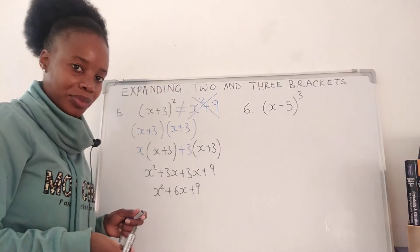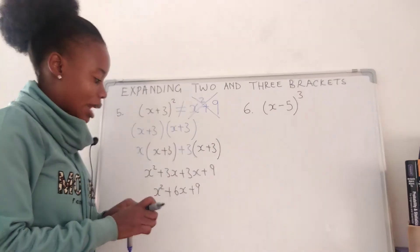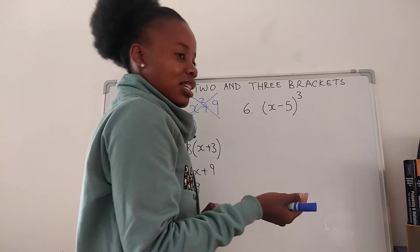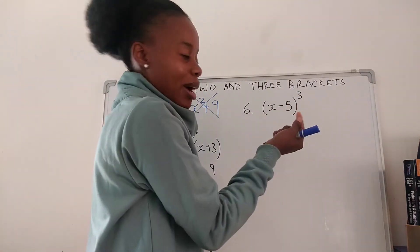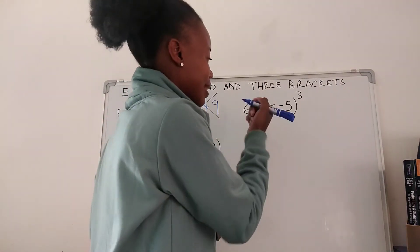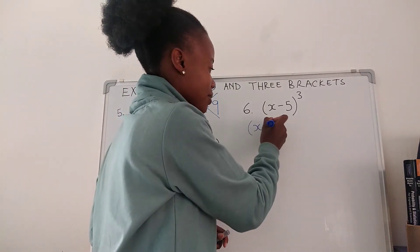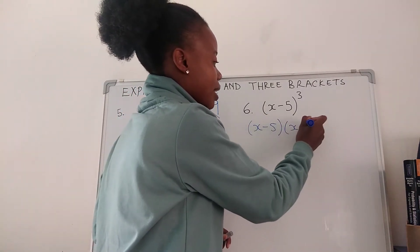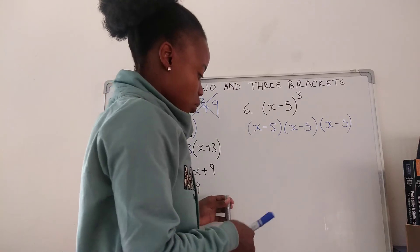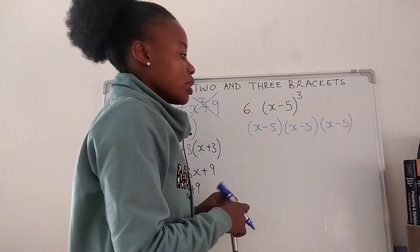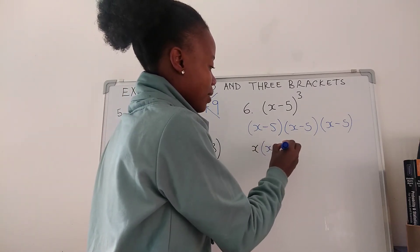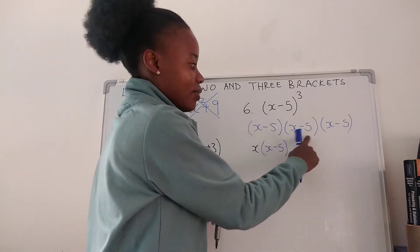Now let's get to number six. Number six: expand the bracket — this is (x − 5) to the power three. Don't just say x to the power three minus 5 to the power three — it's not supposed to be like that. So this is supposed to be (x − 5)(x − 5)(x − 5). Deal with the first two brackets, then use the other bracket when you are done with the first two. So we're going to have x(x − 5) and negative 5(x − 5).